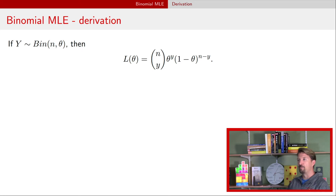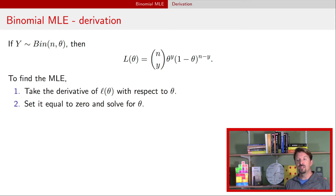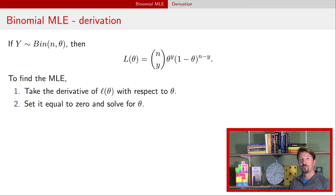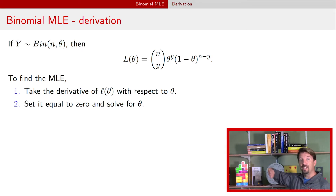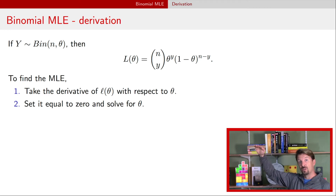If you put in a bigger value into the log, the log of that bigger value is bigger than the previous value. So we'll find the maximum of the log likelihood with respect to theta, set it equal to zero, and solve. Remember that the derivative is the slope of this function, and at the peak of this likelihood that slope is going to be zero. That's why we're taking derivatives, setting equal to zero, and then solving.